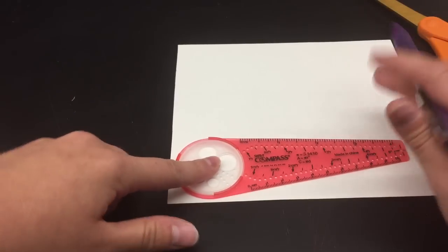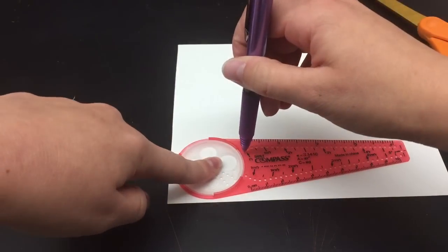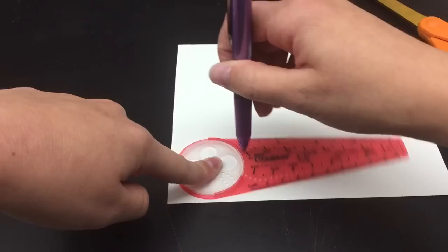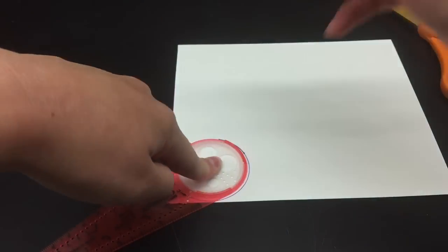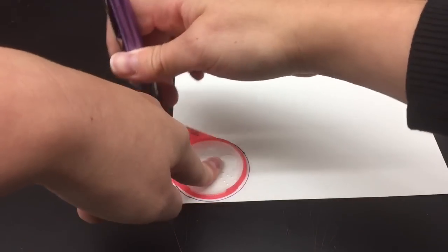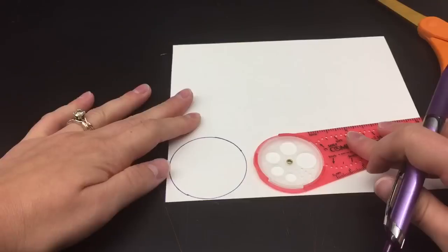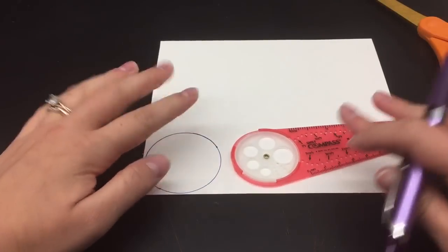So we're going to put our finger on this white part, put our pencil in the one R area, and then draw our circle all the way around. Then we have one circle.